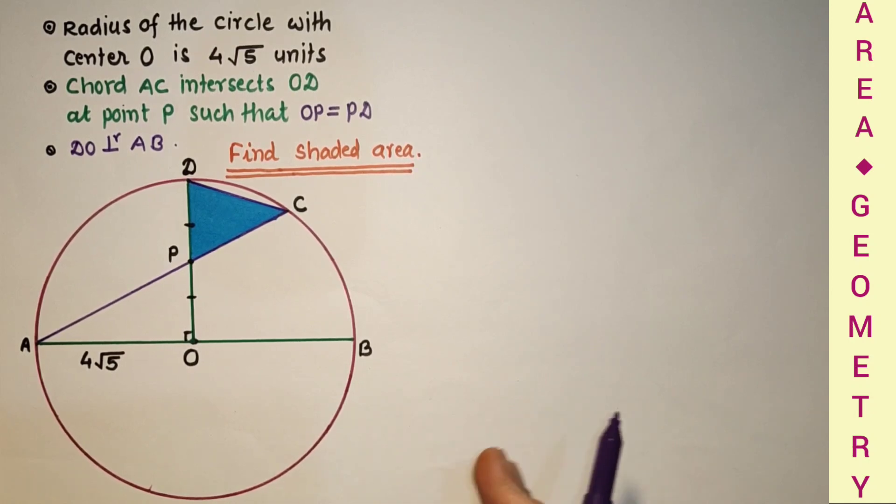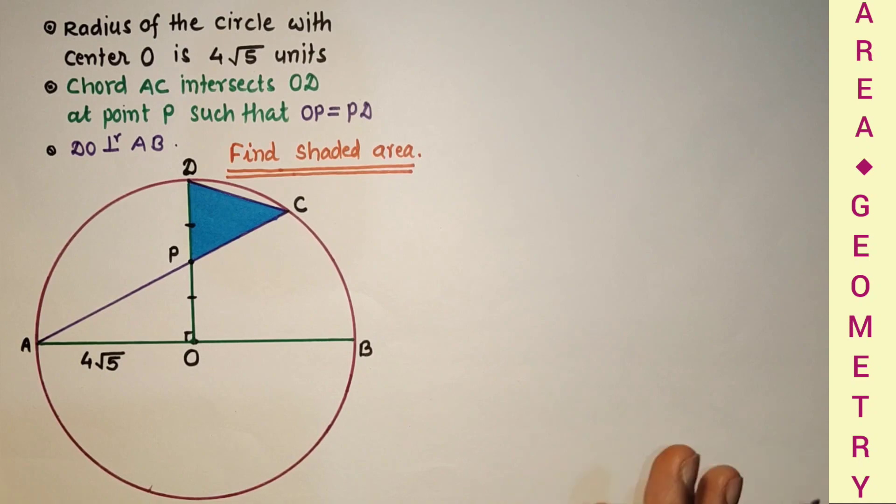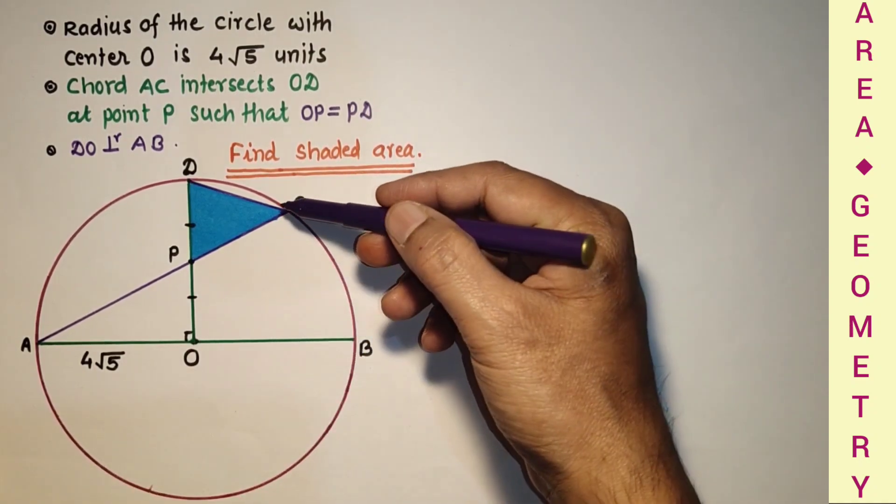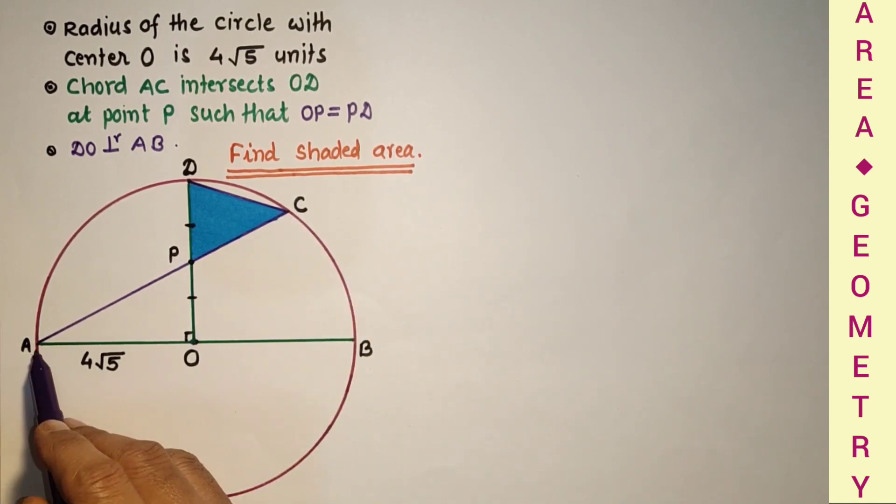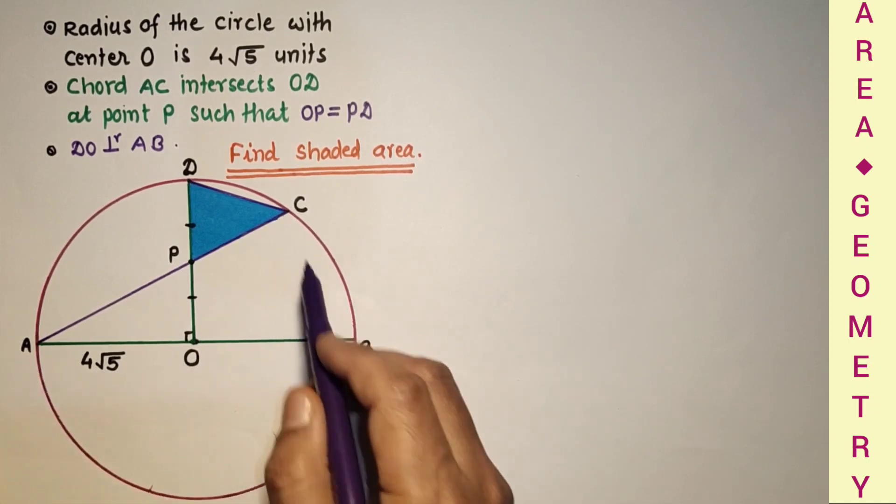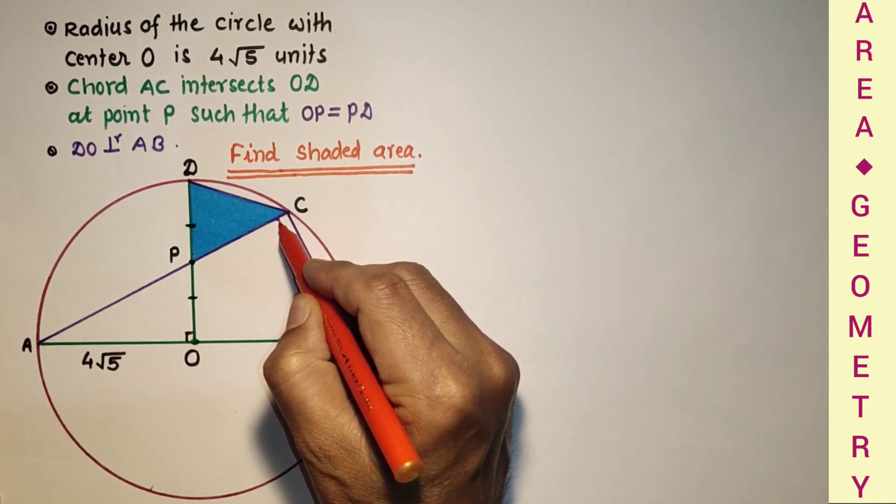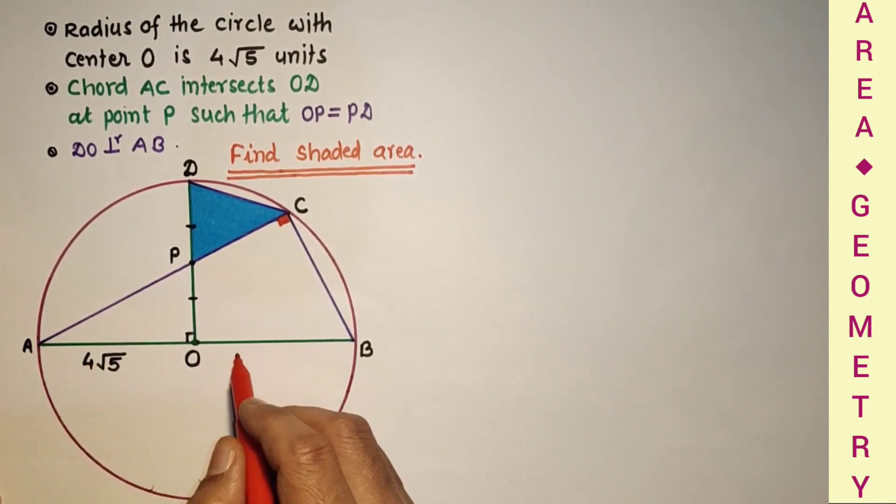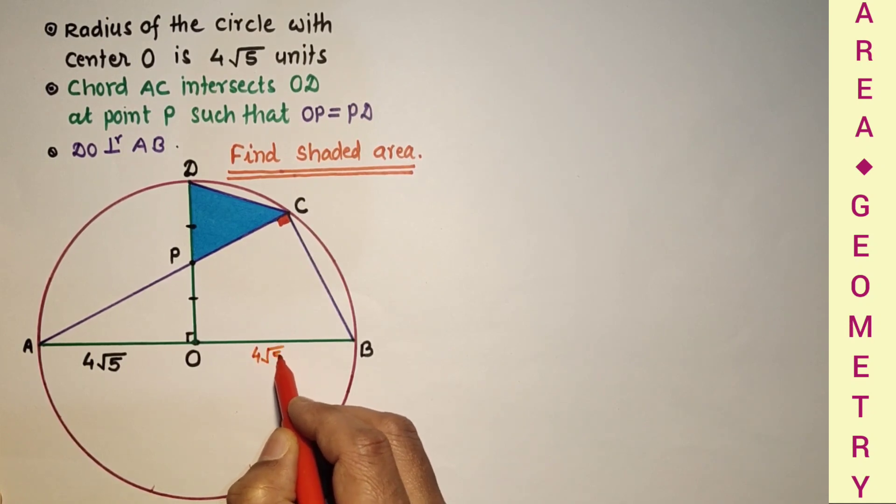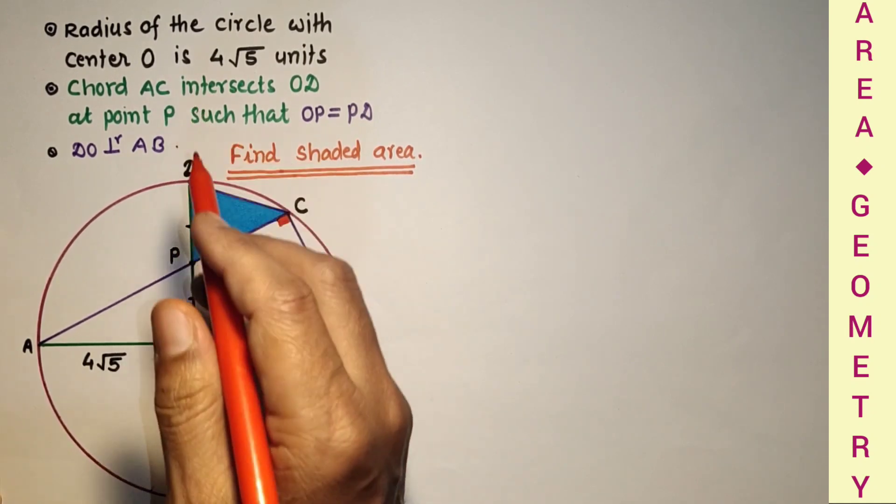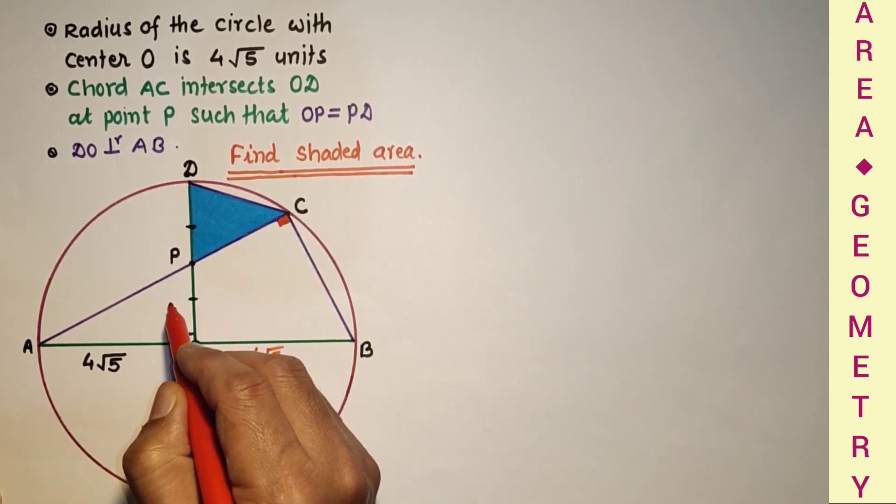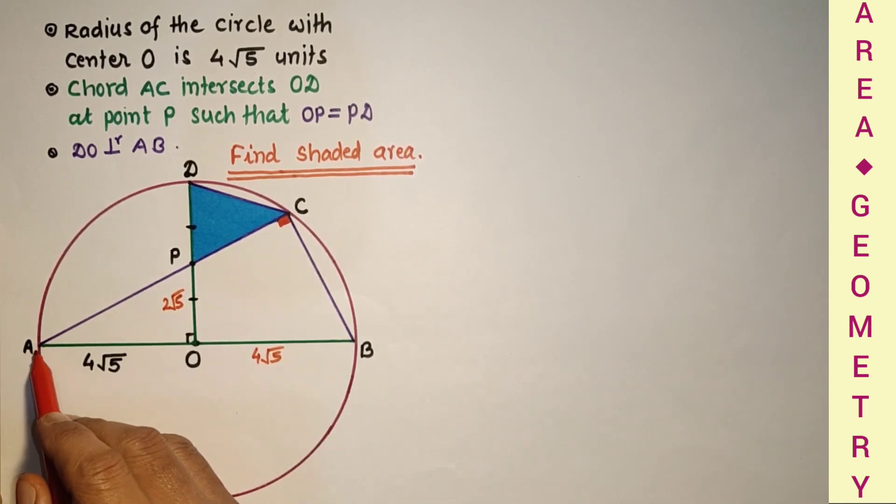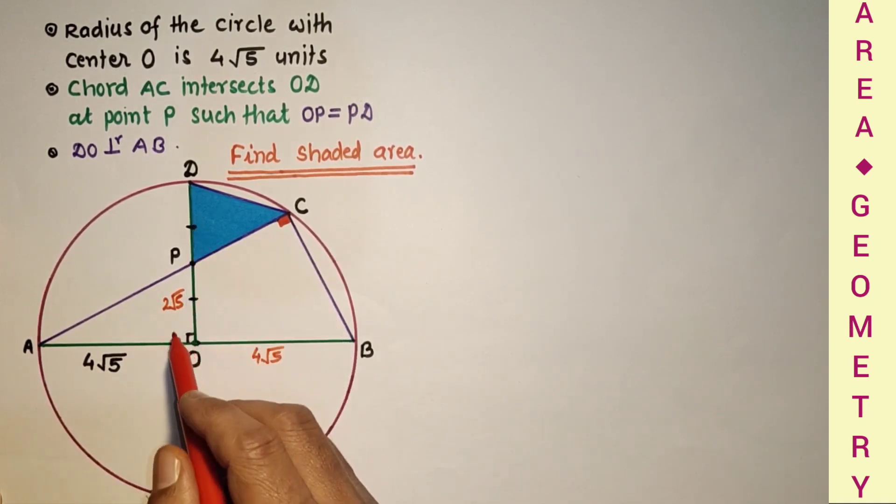And if you find a better solution, please post that solution in comment section. Here if we join CB then angle ACB will be a right angle, because ACB angle is subtended by diameter AB. And diameter subtends right angle. So this angle is right angle. And this AO is 4 root 5, so this will also be 4 root 5. This OD is also 4 root 5. But P is the midpoint of OD, so OP will be only 2 root 5, and this AO is 4 root 5.